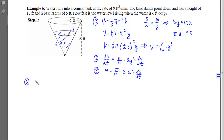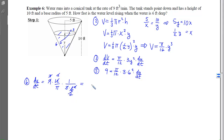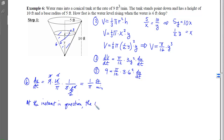With step 5, we plug in: dV/dt = 9 (water is coming in, so positive), y = 6. Solving for dy/dt in step 6: dy/dt = 9 ÷ ((π/12)·3·6²). Simplifying: a 6 goes into 12 twice, 3 goes into 9 three times, leaving 1/π. The units are feet per minute. This is positive, which makes sense since the water level is rising. At the instant in question, the water level is rising at a rate of 1/π feet per minute.